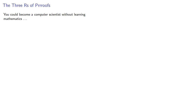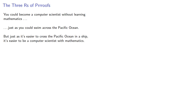You could become a computer scientist without learning mathematics, just as you could swim across the Pacific Ocean. But just as it's easier to cross the Pacific Ocean in a ship, it's easier to become a computer scientist with mathematics.